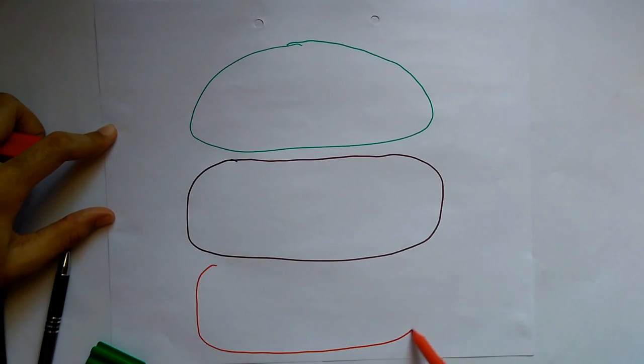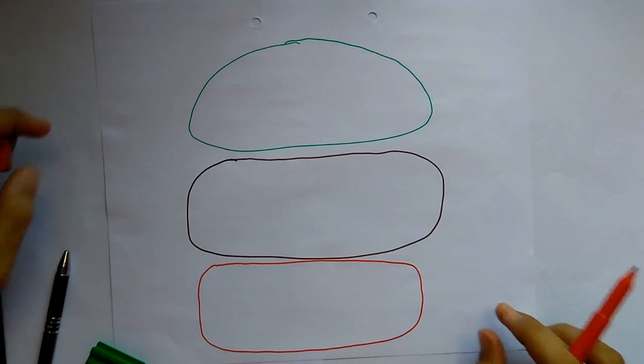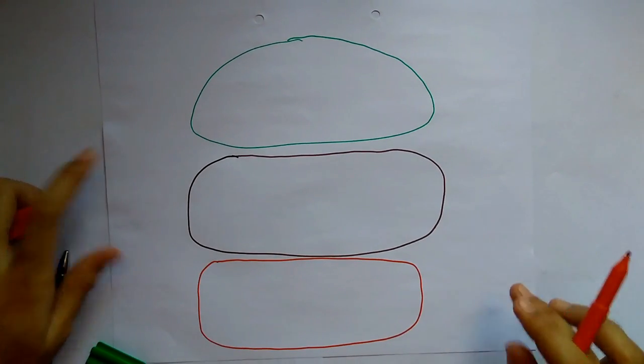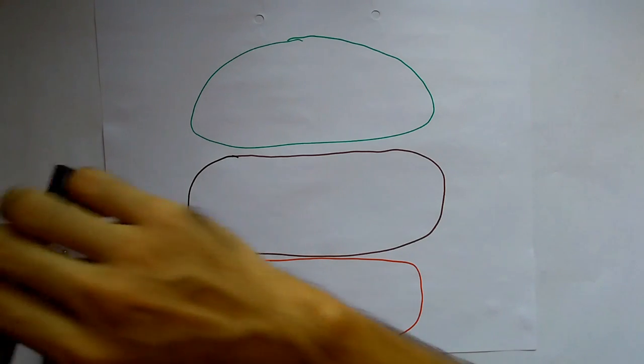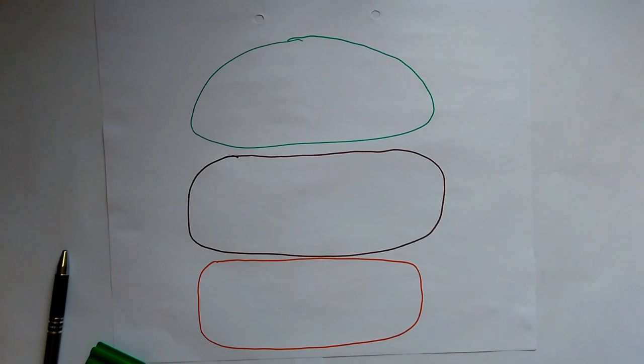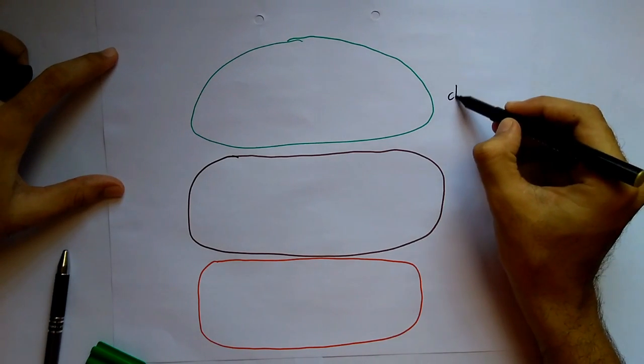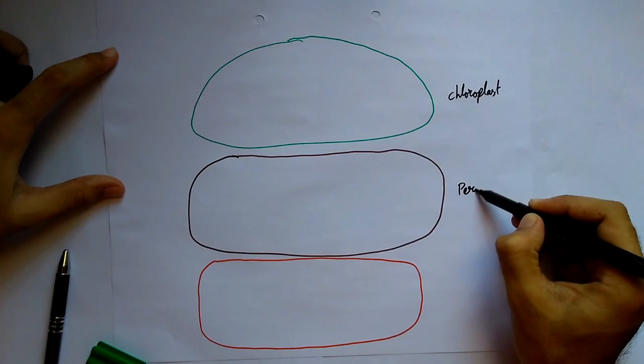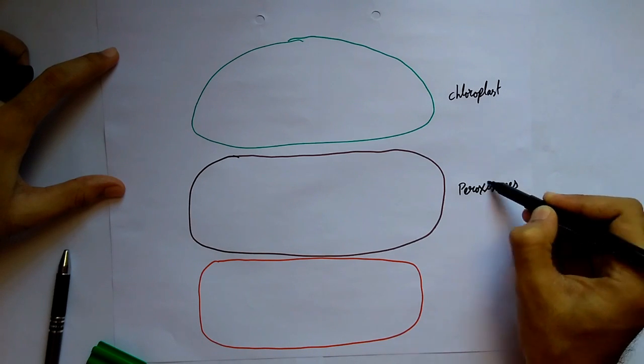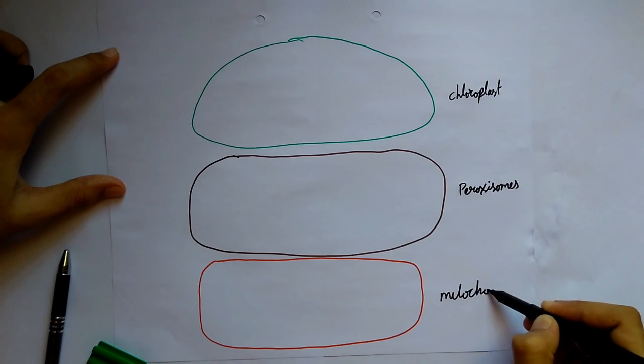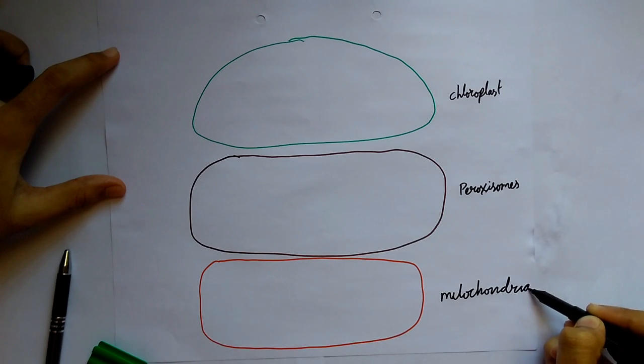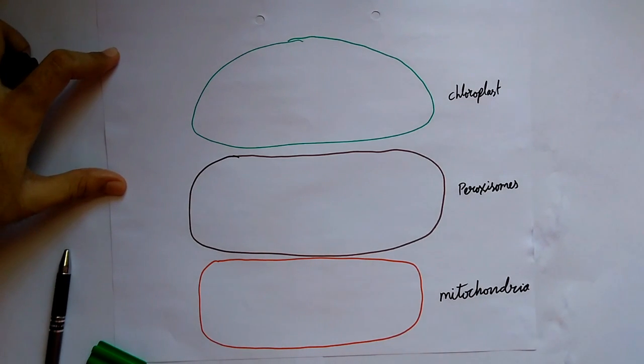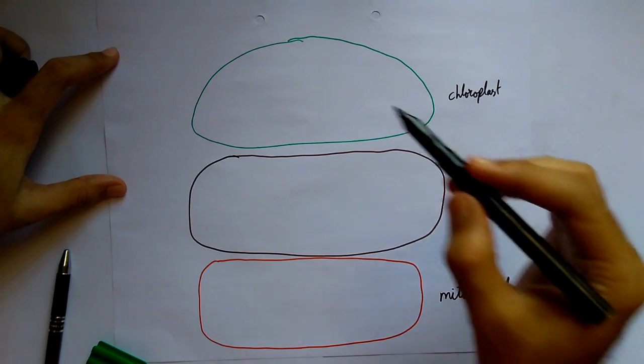Let's see how this cycle goes and what takes place. If you see, chloroplast, peroxisome, mitochondria where RUBP, you can see here RUBP.